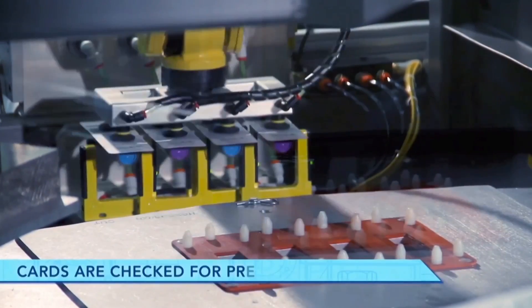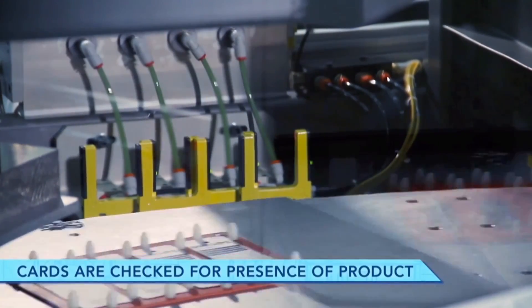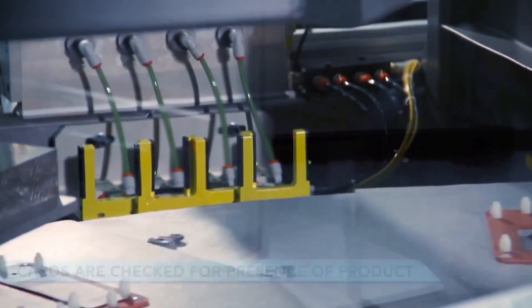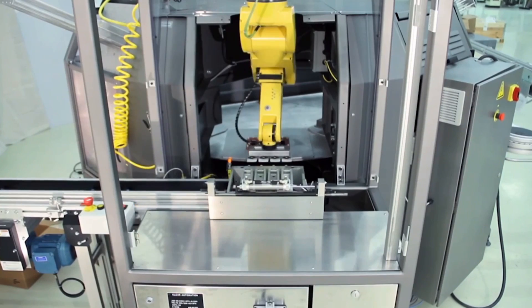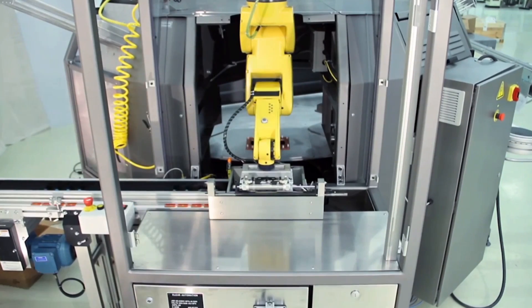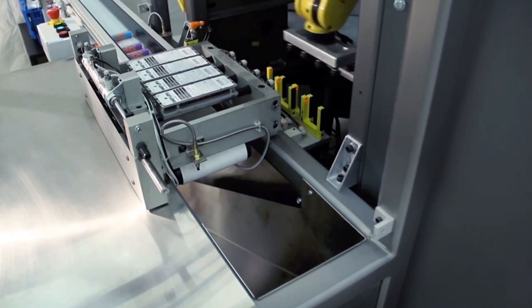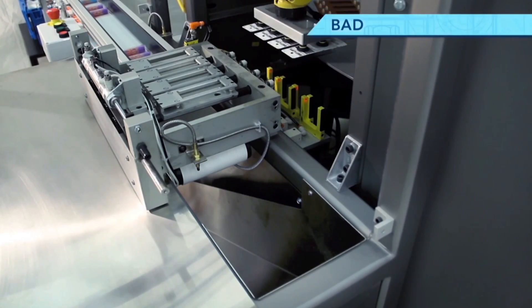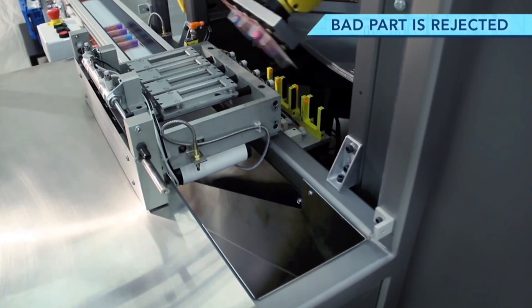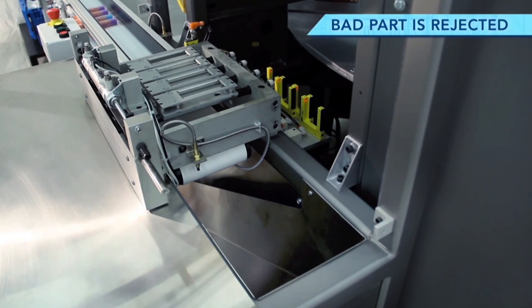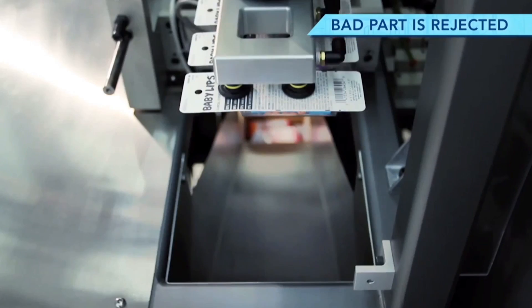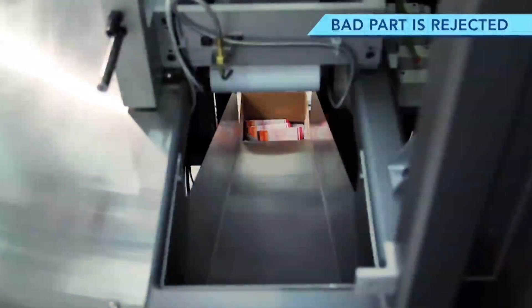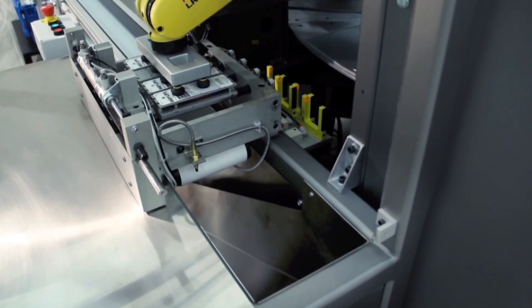The cards are checked for presence of the product. If a product is bad, it is released down a reject chute and out of the system. Good parts are placed on an exit conveyor.